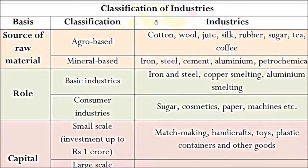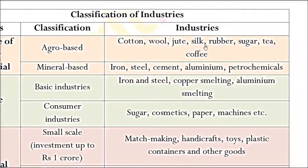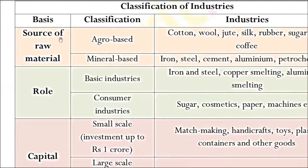Classification of industries by raw material source: if raw material comes from agriculture, it is agro-based. Industries like cotton, wool, jute, silk, rubber, sugar, tea, and coffee are agro-based. If the raw material comes from minerals, it is mineral-based — industries like iron, steel, cement, aluminium, and petrochemicals are mineral-based.